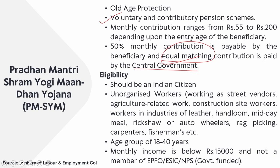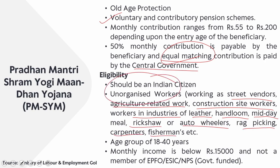The eligibility for PM-SYM is clear: Indian citizens who are unorganized workers — such as street vendors, agriculture-related workers, construction site workers, workers in industries like leather, handloom, midday meal, rickshaw or auto drivers, rag pickers, carpenters, fishermen, etc. The age group is 18 to 40 years and monthly income should be below Rs. 15,000. Importantly, the applicant should not be a member of EPFO, ESIC, NPS, or any other government-funded contributory pension scheme.